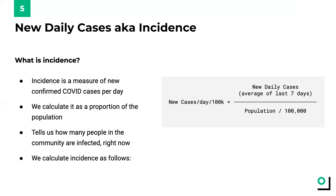It is this current speed of spread that the incidence metric helps us to capture. The incidence metric allows us to identify how many new COVID cases there are at a point in time in a particular state or county. Specifically, we calculate incidence as follows: we take an average of the new daily cases over the last seven days and divide it by the population over 100,000. That gives us the new daily cases for every 100,000 people.